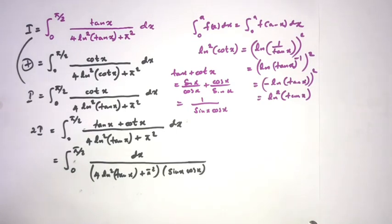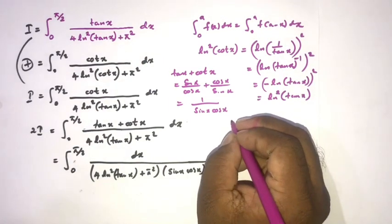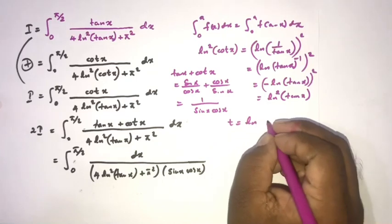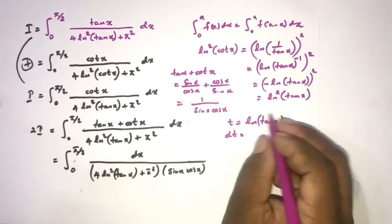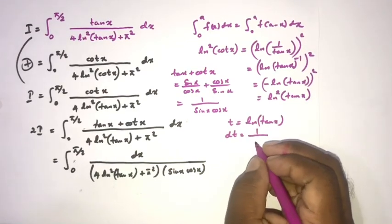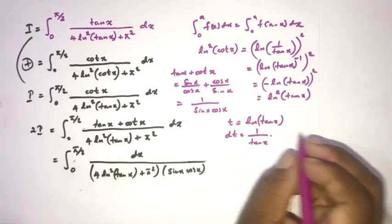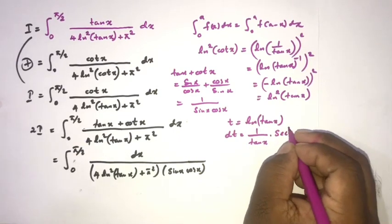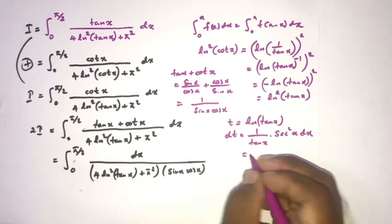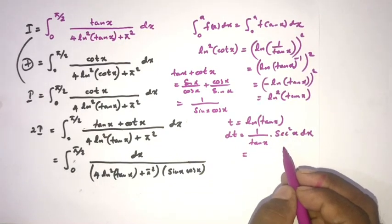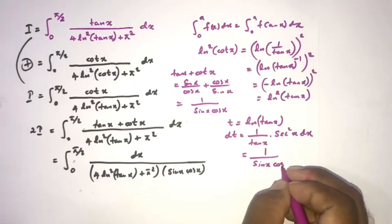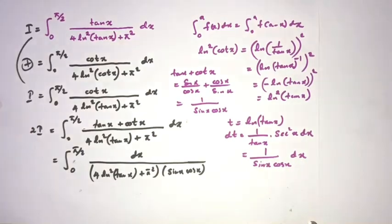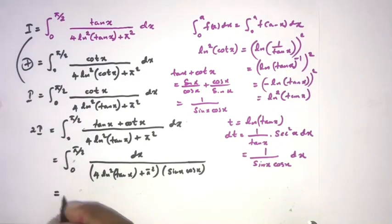We use the substitution t = ln(tan x). Differentiating: dt = [1/tan(x)]·sec²(x) dx = [cos(x)/sin(x)]·[1/cos²(x)] dx = 1/[sin(x)·cos(x)] dx. This exactly matches the numerator, so 1/[sin(x)·cos(x)] dx = dt.